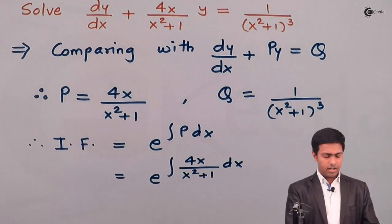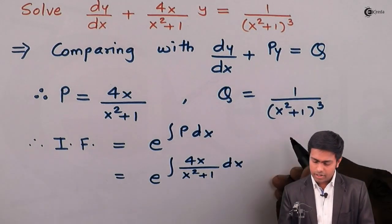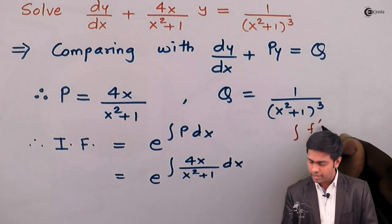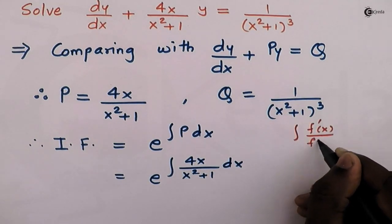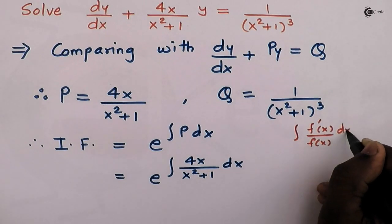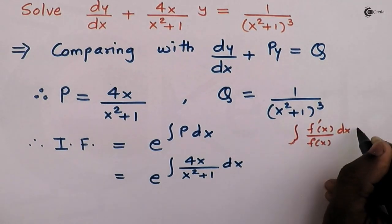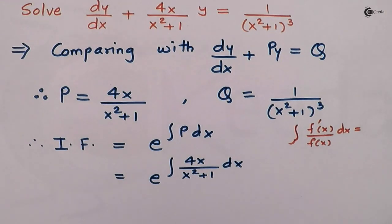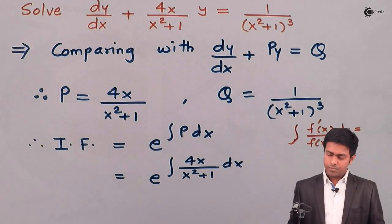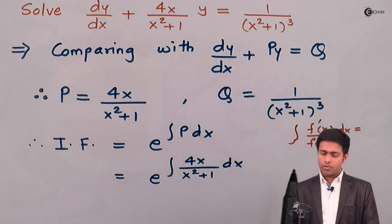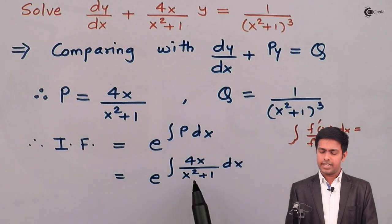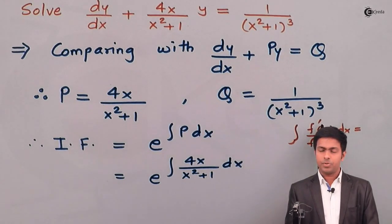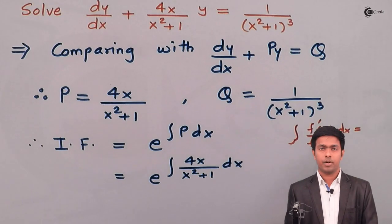Here I am going to apply the property that the integration of f'(x) upon f(x) dx equals log|f(x)|. For that, let's observe the denominator. So f(x) is x² + 1, and the numerator must be the derivative of this denominator.